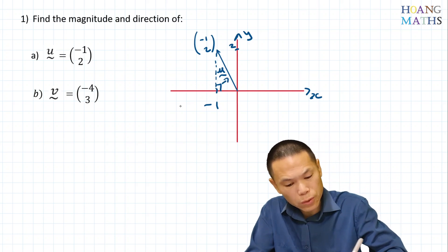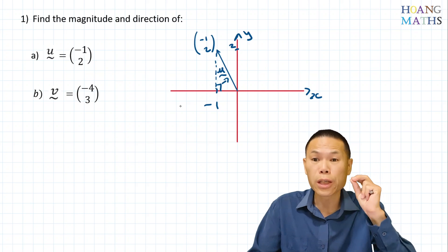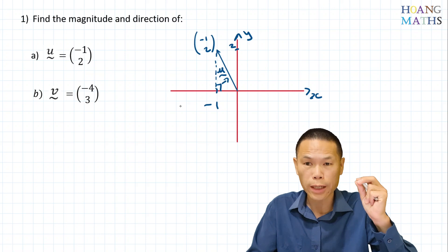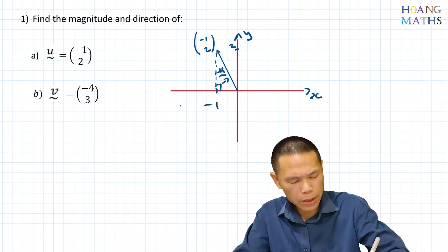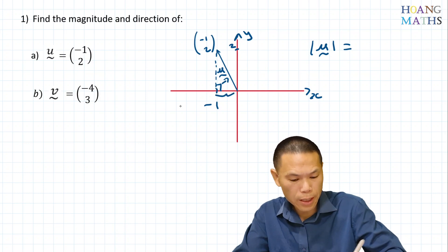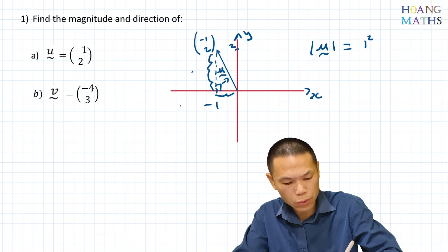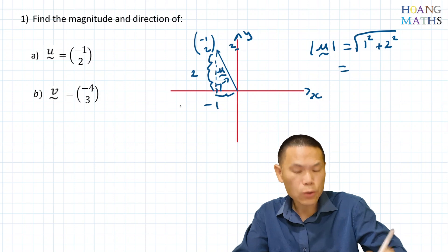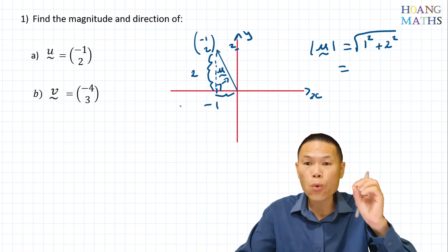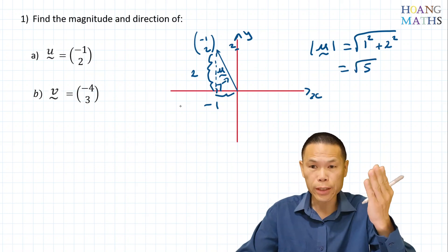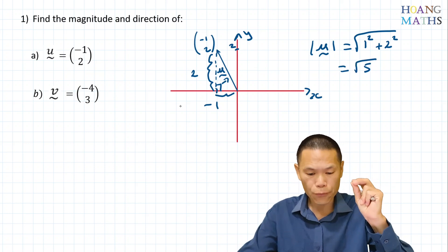To find the magnitude, we construct a triangle using Pythagoras' theorem. The magnitude is the distance from the origin to the point (-1, 2). From here to here is one unit, so 1 squared. From here to here is 2 units, so plus 2 squared, and the square root of that. 1 squared is 1, 2 squared is 4, add together is 5. So that is square root of 5 units — the magnitude of vector U.